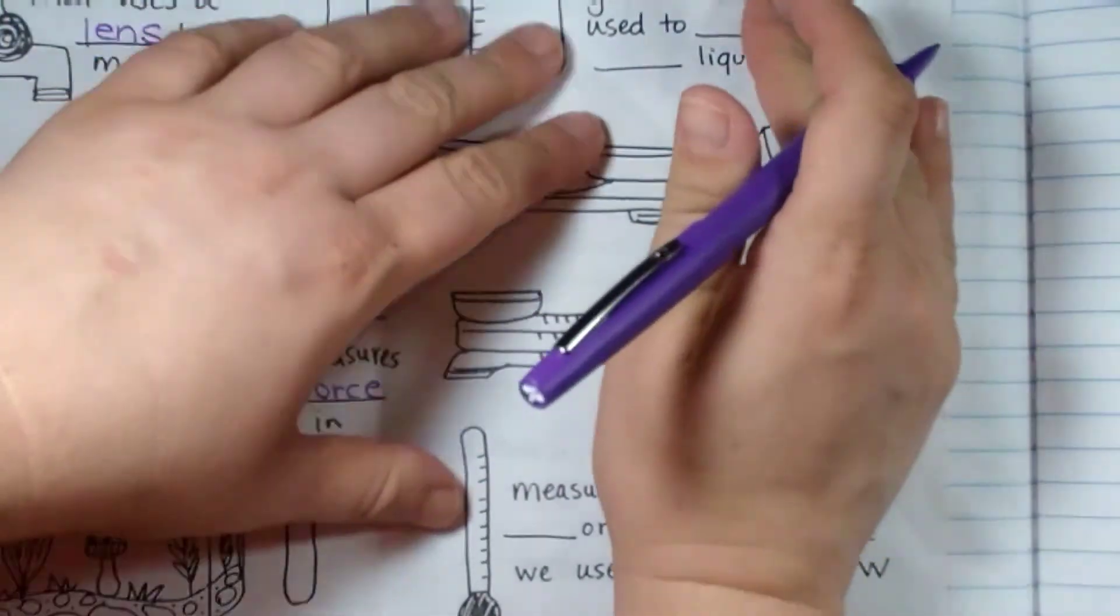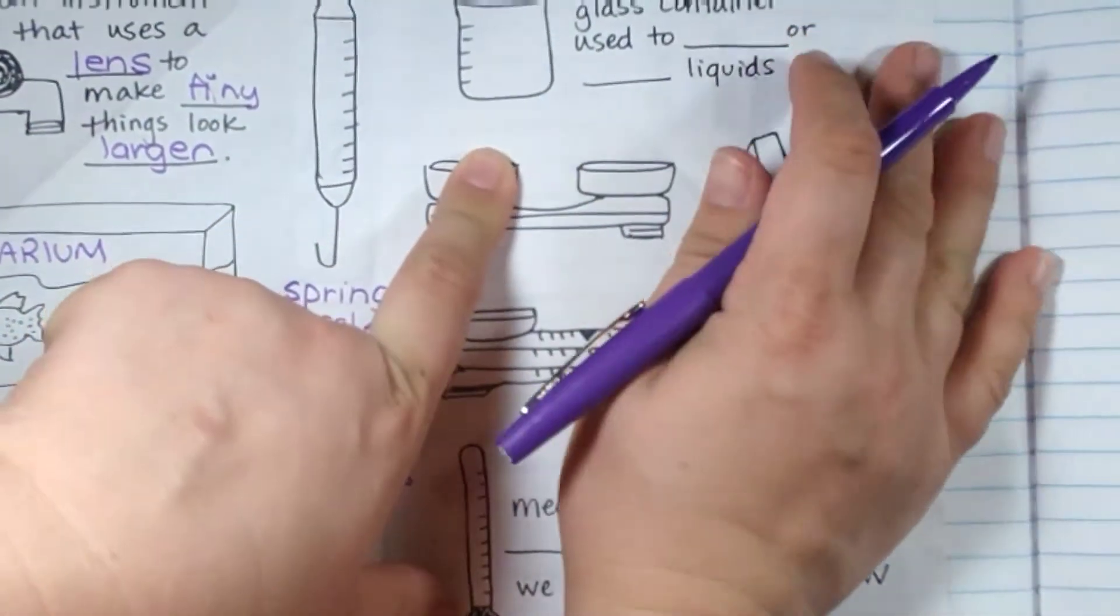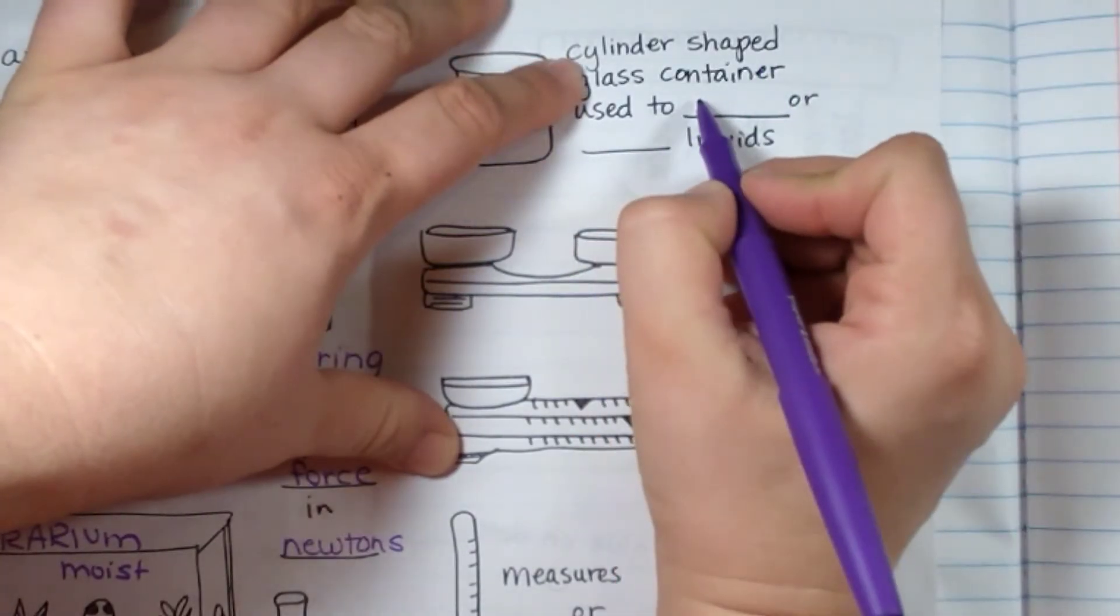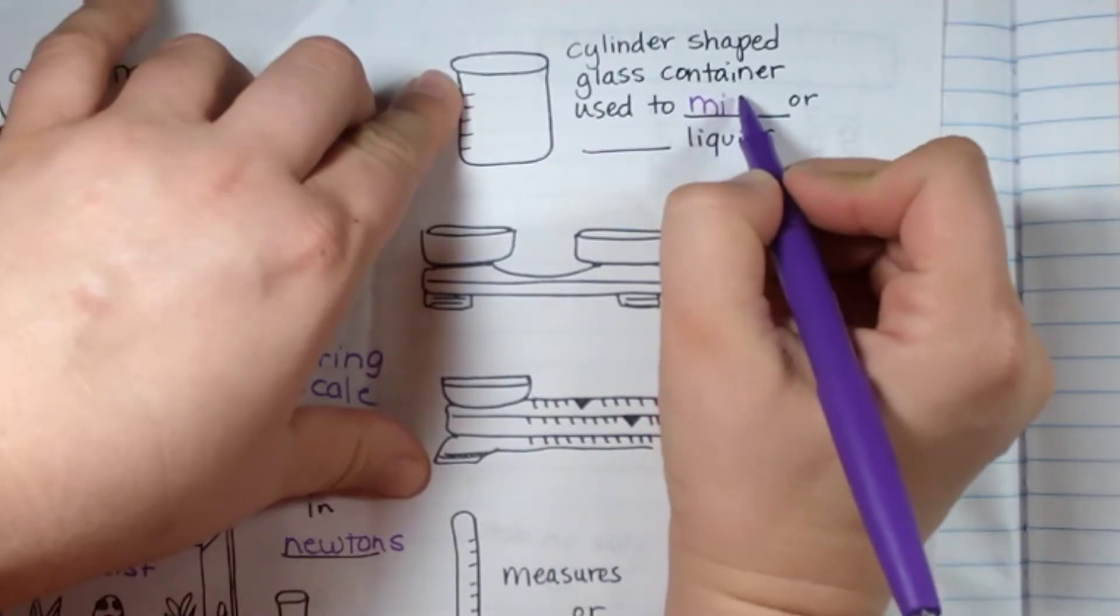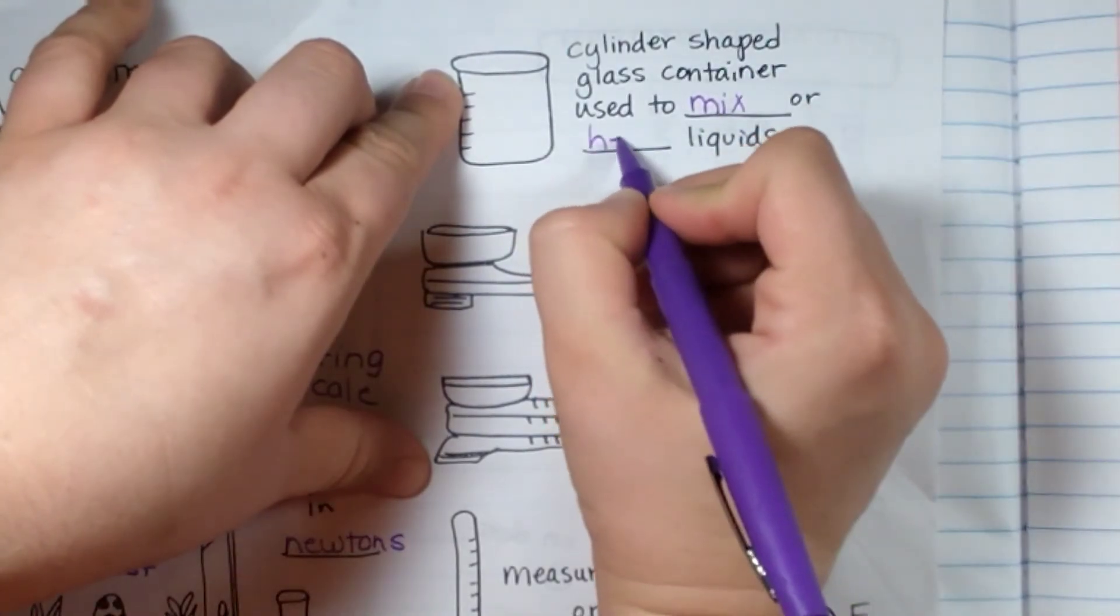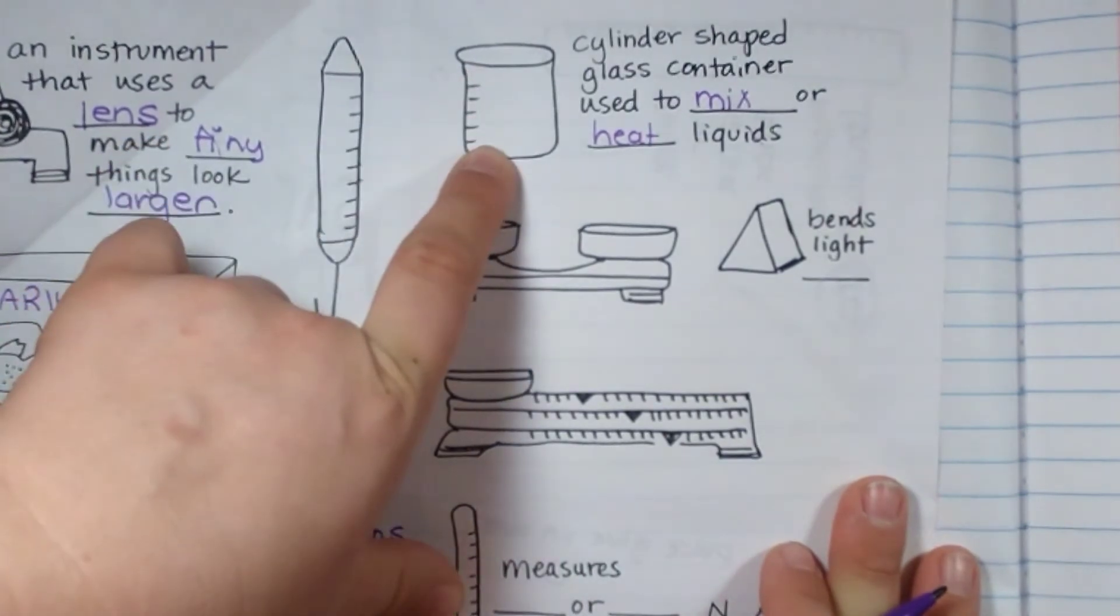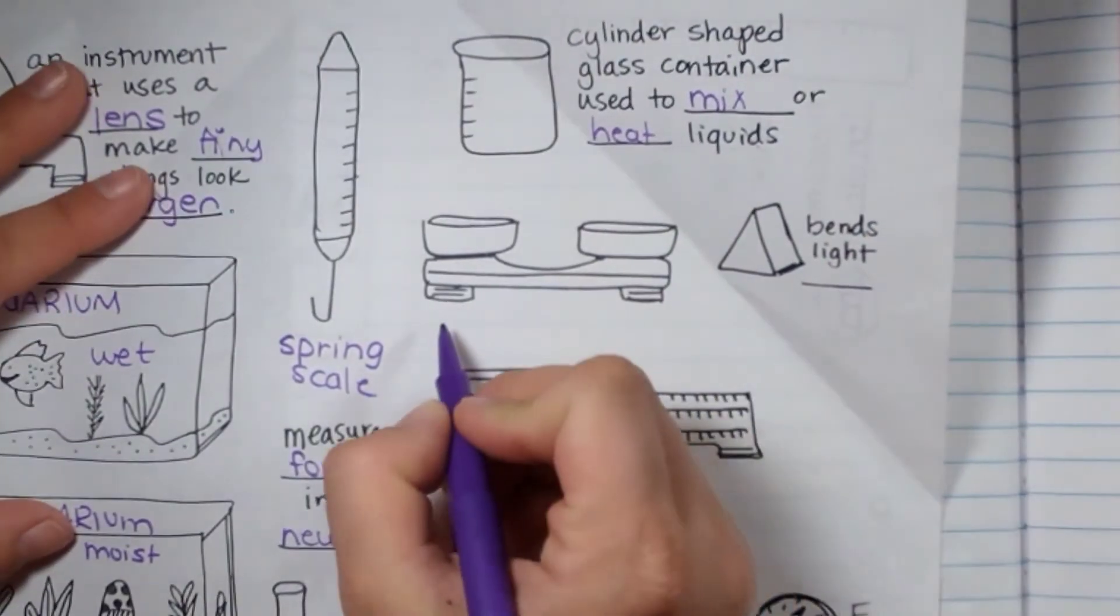The next thing we have is a cylinder-shaped glass container, kind of like a measuring cup, but it measures how much you need, and it's also used to mix or heat up liquids. It's made out of glass, so you can put it on a burner and it won't melt. So a lot of times in chemistry they use that.